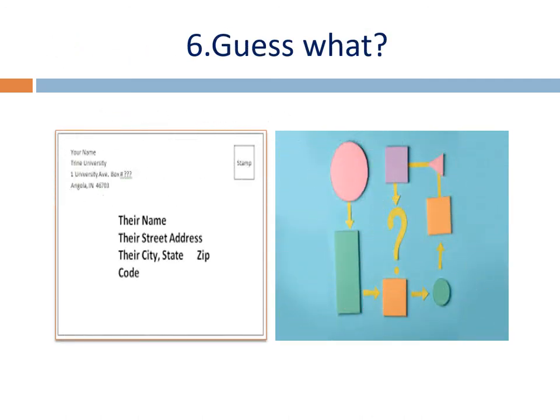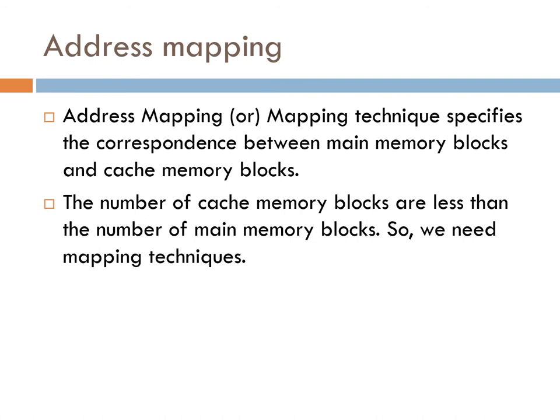Can you guess this? This is like an address and this is one mapping scheme — so 'address mapping'. Address mapping means the address corresponds to which information, because usually the cache memory size is small compared to main memory. You should have some proper mapping scheme to map which block in cache memory belongs to which block in main memory. This address mapping technique specifies the correspondence between main memory blocks and cache memory blocks.